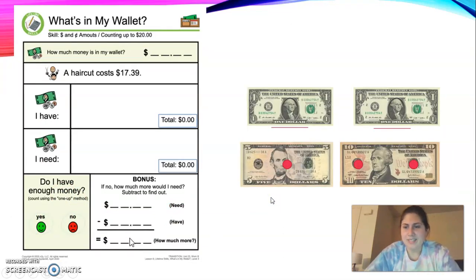Mike, this one's for you. A haircut costs $17.39. So first, count your money in your wallet. Circles, count by fives. Lines, count by ones. Figure out how much money you have. If you don't have enough money, match your words to do your math problem.